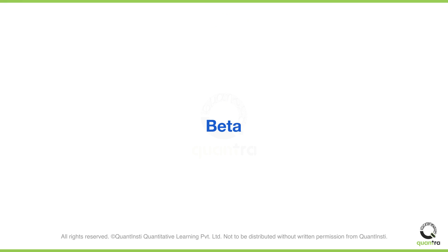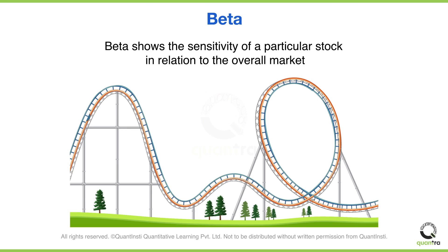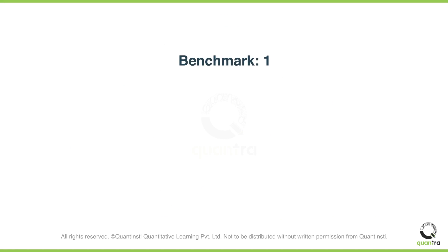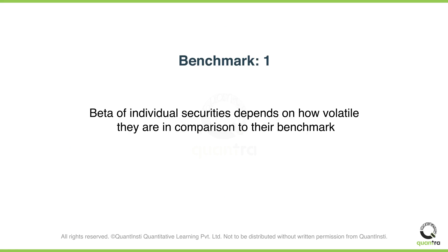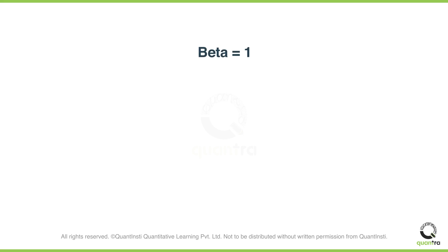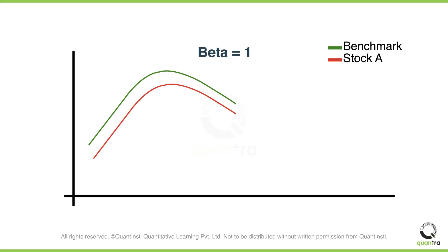Now let's talk about Beta. Beta is like the intensity level of a roller coaster ride — it's the sensitivity of a particular stock in relation to the overall market's movements. If the index's Beta is set as the benchmark at 1, then the individual stock's Beta depends on how volatile they are in comparison to that benchmark. If the Beta of a stock is equal to 1, it means that the movement in the stock's price is the same as the benchmark index.